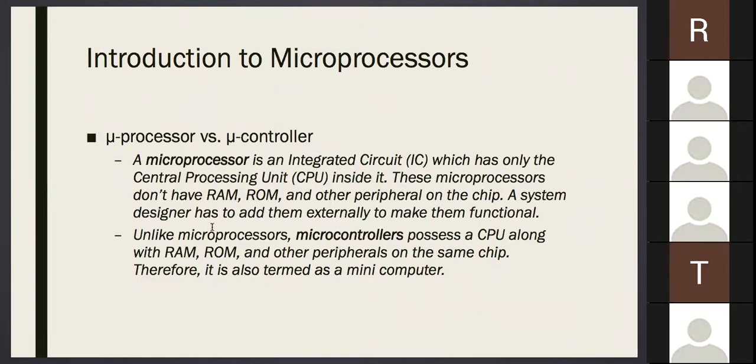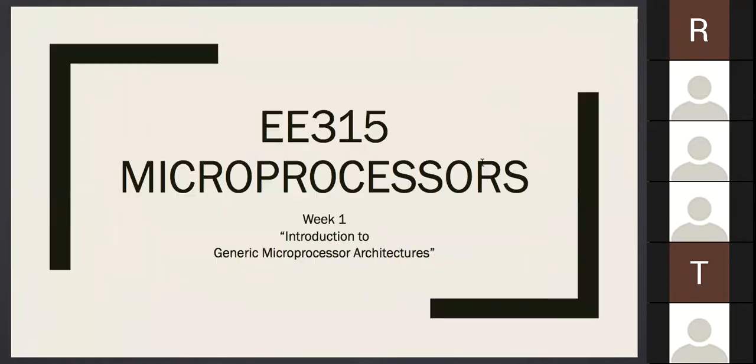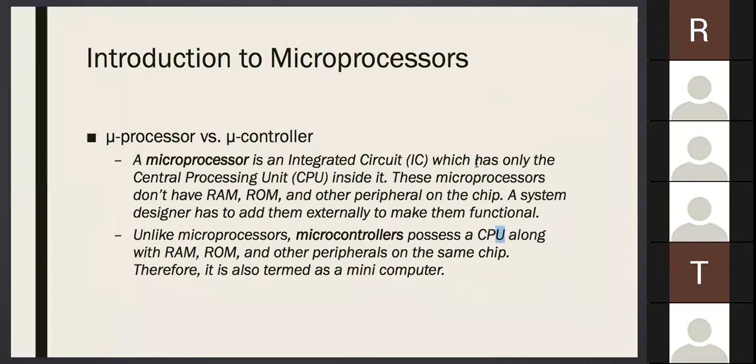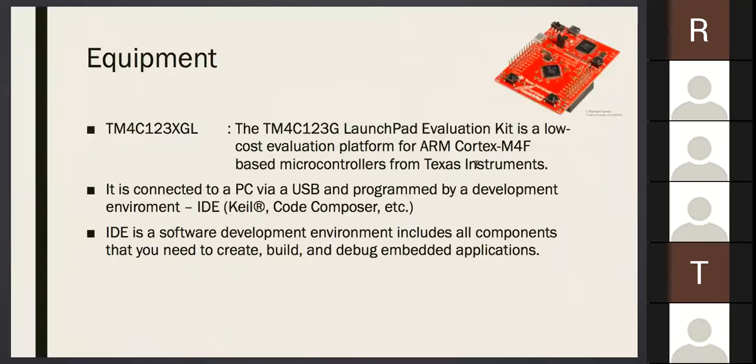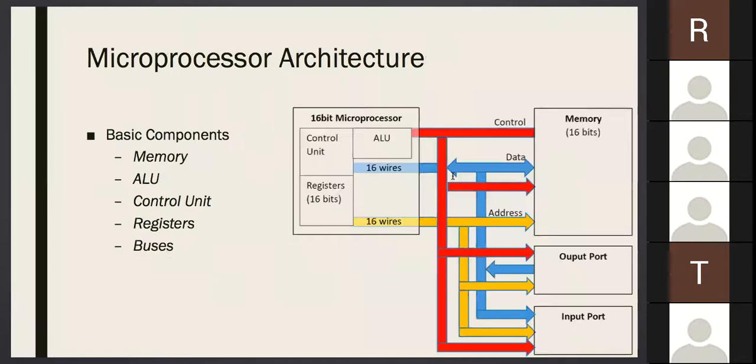However, unlike microprocessor, the microcontroller possesses this chip and along with the RAM and the peripherals and everything. So guys, this little black thing is the microprocessor. This whole thing that you're supposed to buy or borrow from the university lab is the microcontroller. The first thing we have learned.